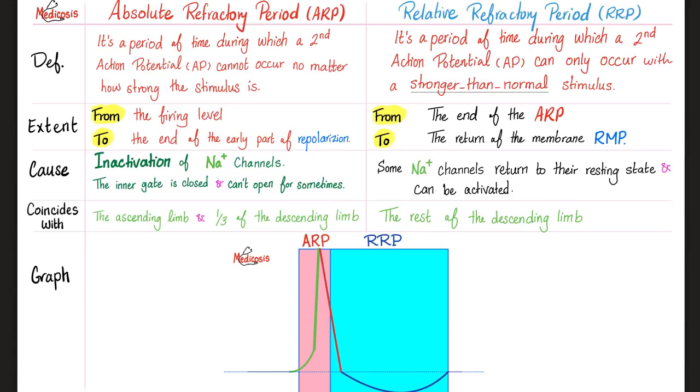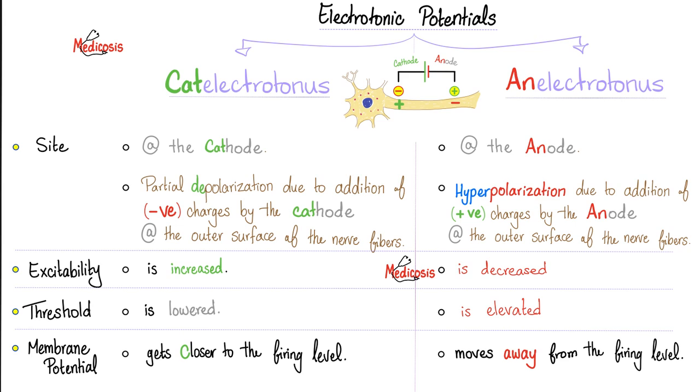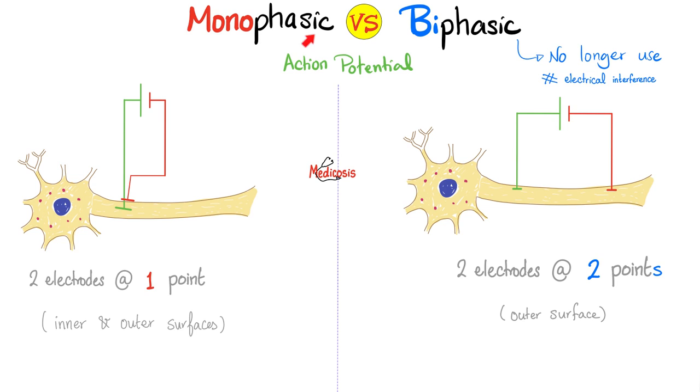The refractory period was discussed before. Subthreshold will give you a local response or it will give you electrotonic potentials such as catelectrotonus and anelectrotonus. The cations are the positive charges. Think of the positive charges as the good guys and the negative charges as the bad guys. So the catelectrotonus gets you closer to the firing level. What happens to excitability? It's increased. Good guys excite me. But bad guys, they bore me. Excitability is decreased and I'm moving away from the firing level. When you increase calcium at the ECF, you decrease nerve excitability. Anything that decreases nerve excitability is a membrane stabilizer.